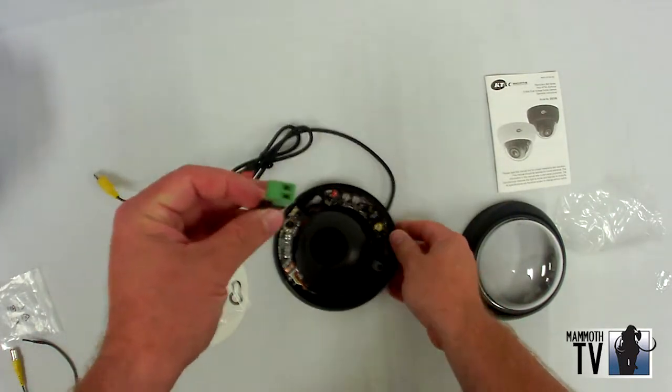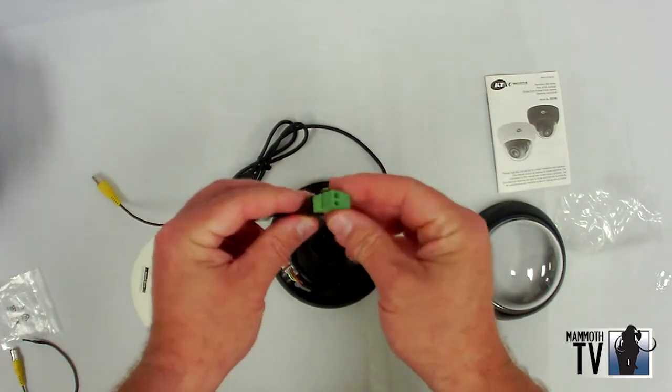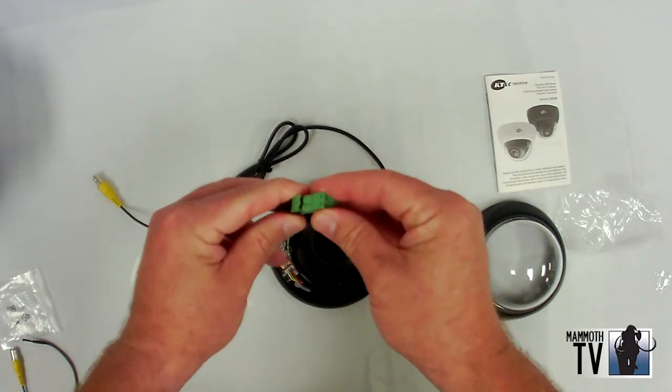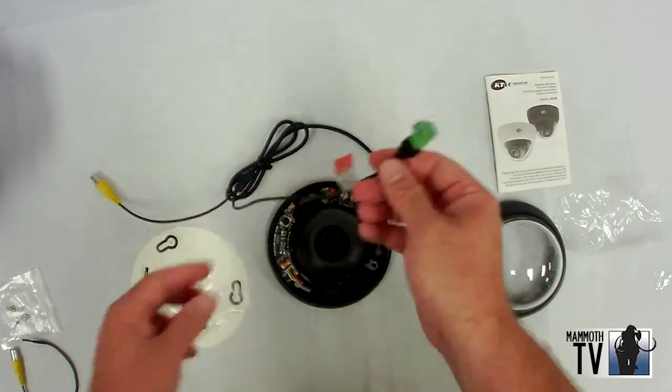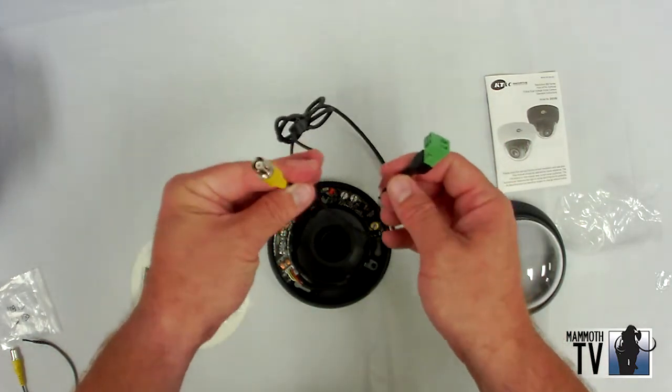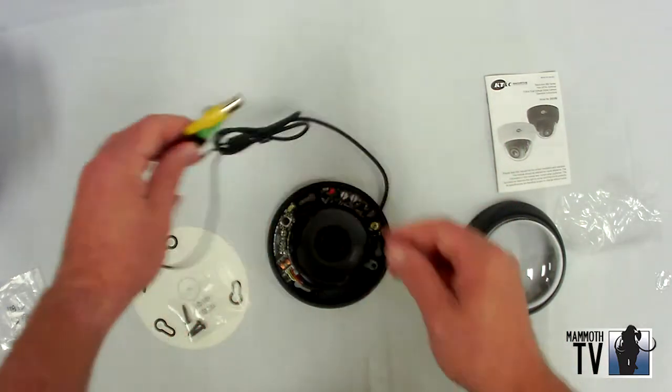This is a dual voltage camera, so it has this type of power plug on here. You can put either 12 volts or 24 volts on it. It has a BNC connector to connect your coax cable.